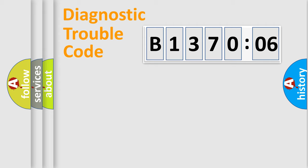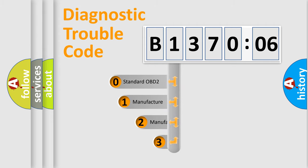Powertrain, body, chassis, and network. This distribution is defined in the first character code.